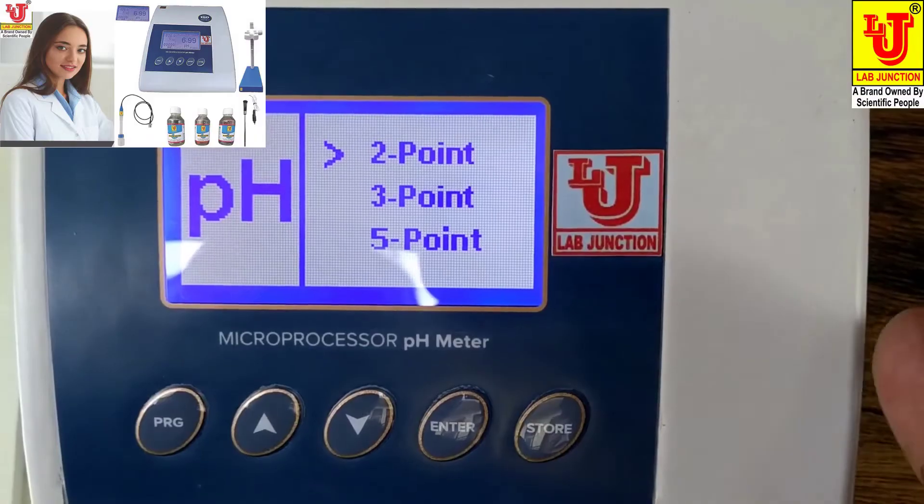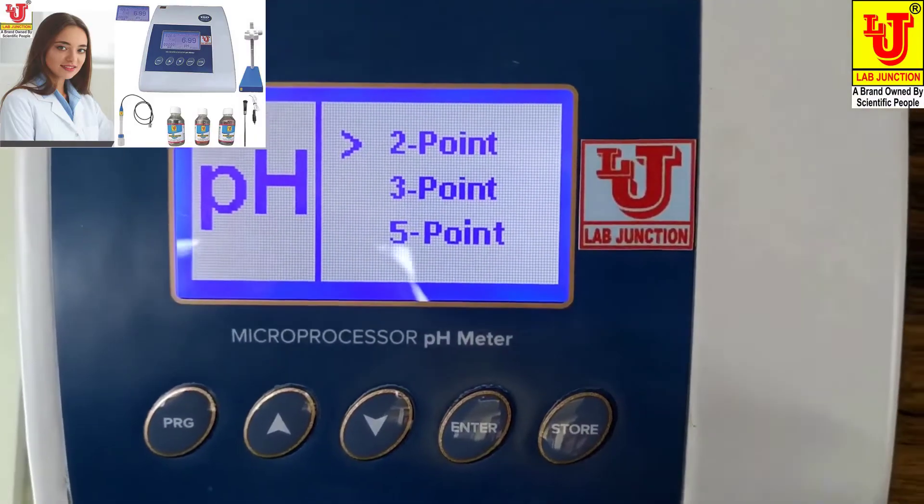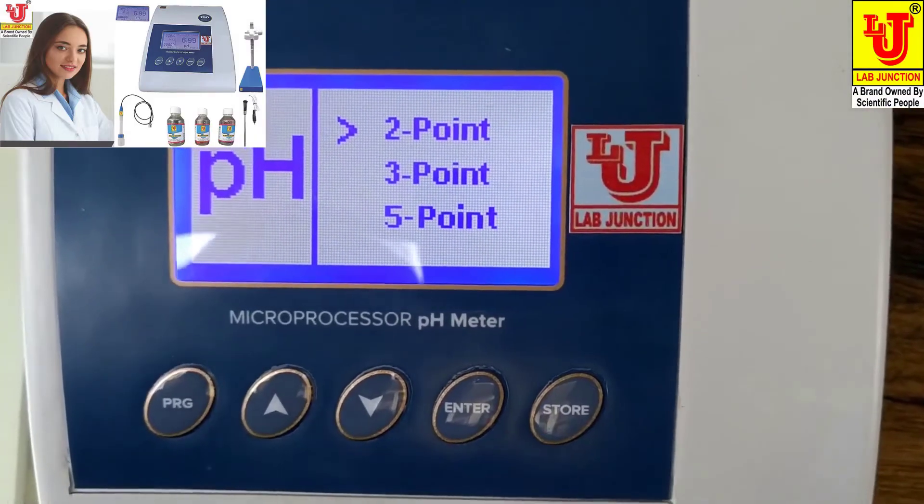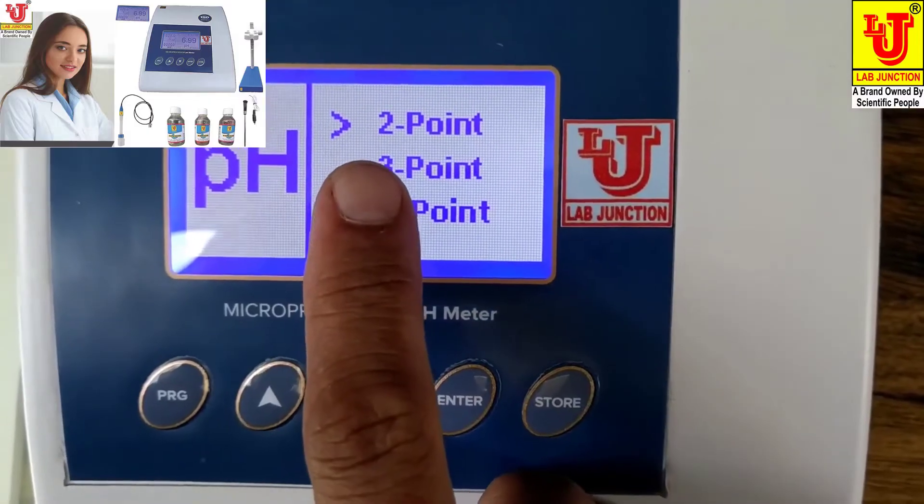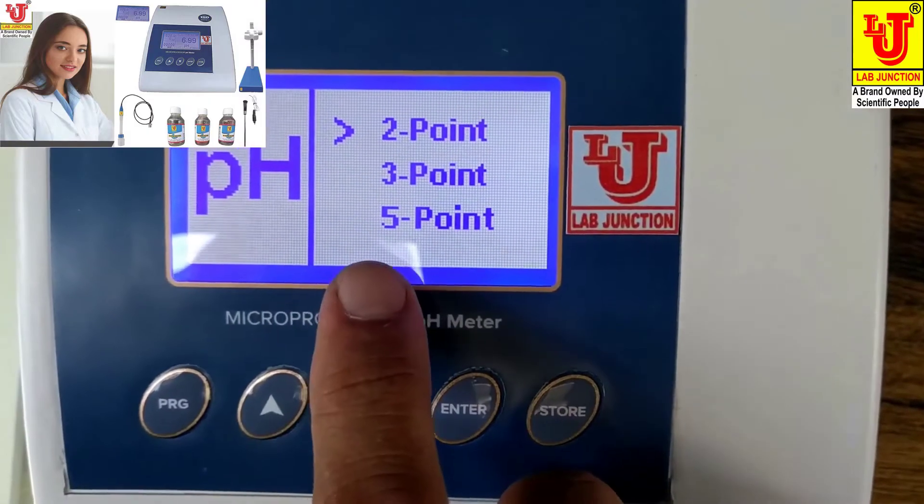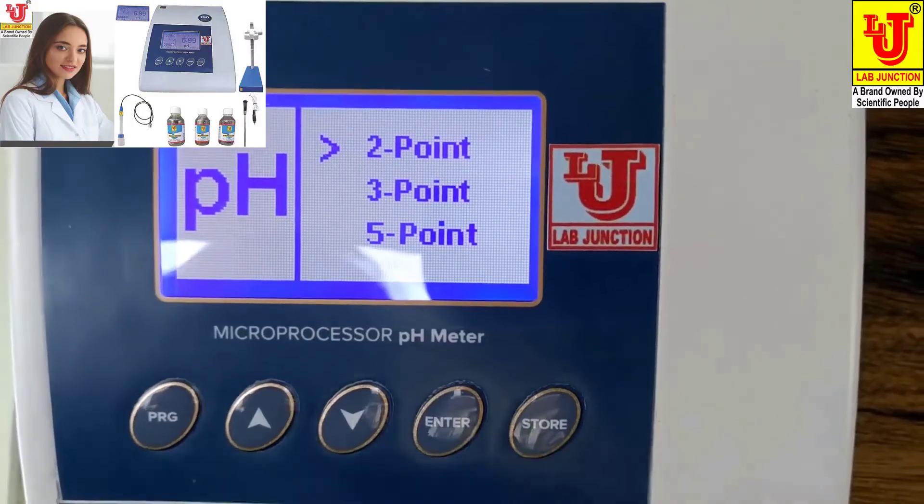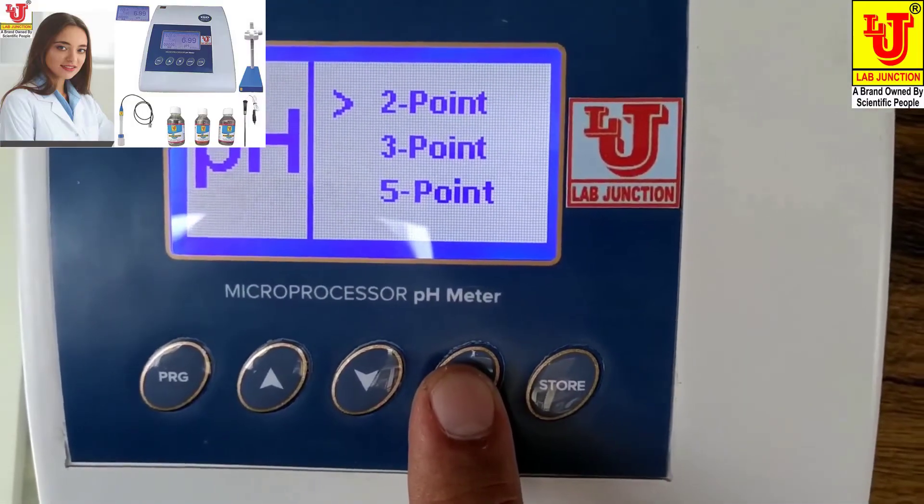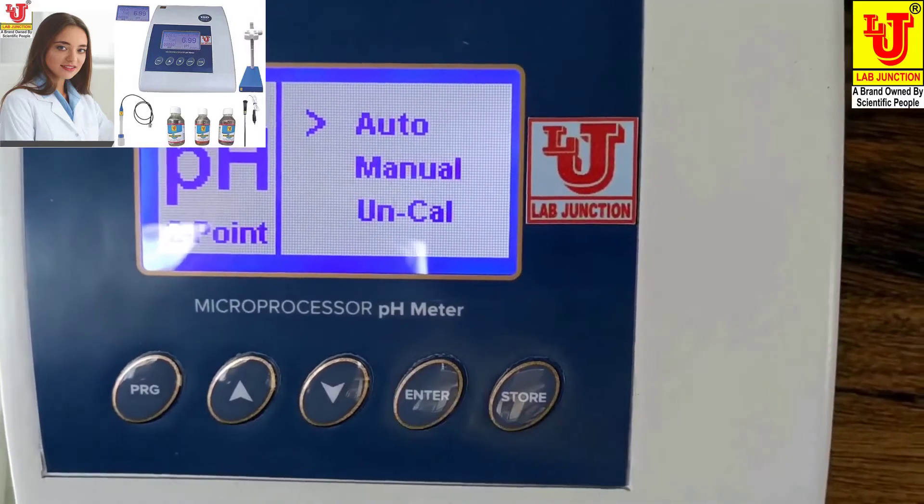This is a five-point calibration pH meter, but options are three. You can also calibrate two-point, three-point, or five-point. I am calibrating two-point calibration. Enter.